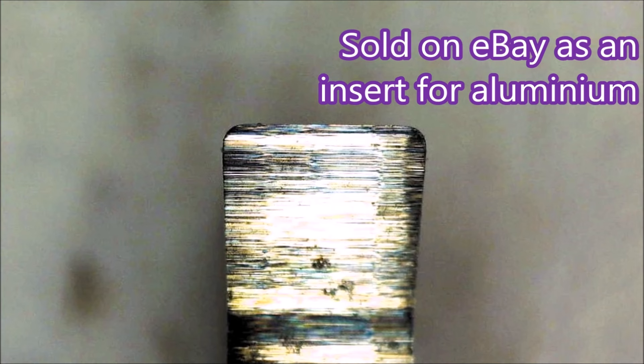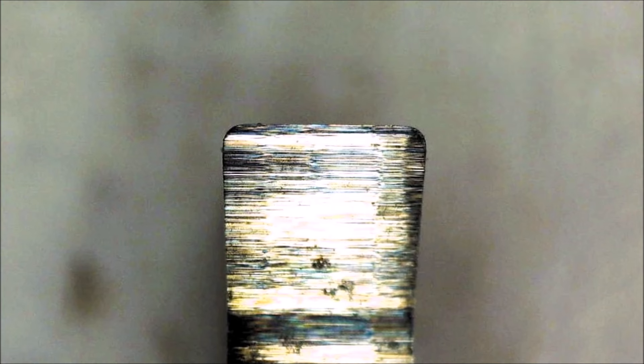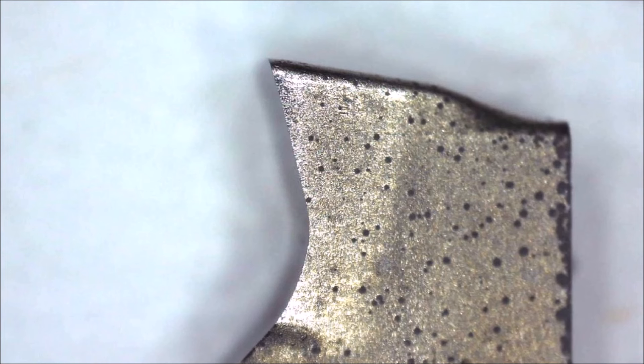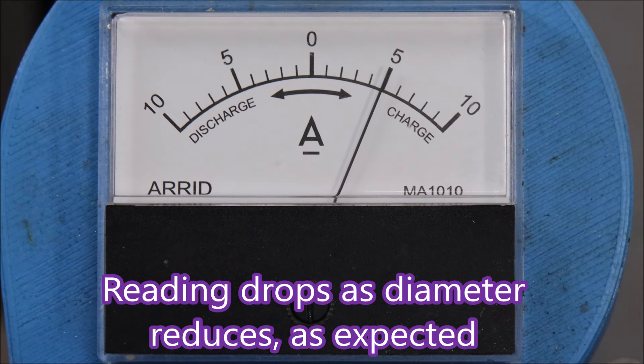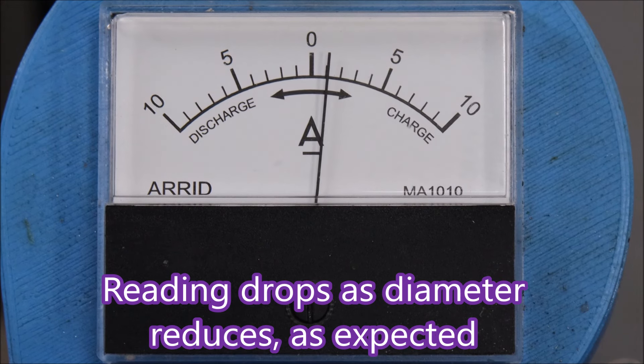This is the insert I'm using. I bought it on eBay, it was advertised as being for aluminum, and there's a side view of it and it's really quite sharp. Here's a quick look at the ammeter readings while the parting tool was taking these cuts.